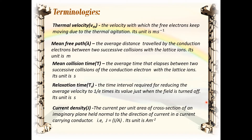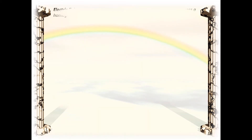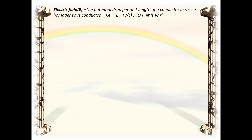Current density J — the current per unit area of cross section of an imaginary plane held normal to the direction of current in a current-carrying conductor; J = I/A, where I is the current and A is the area of cross section; its unit is ampere per meter square. Electric field E — the potential drop per unit length of a conductor across a homogeneous conductor; E = V/L, where V is the potential drop and L is the length of the conductor; its unit is volt per meter.